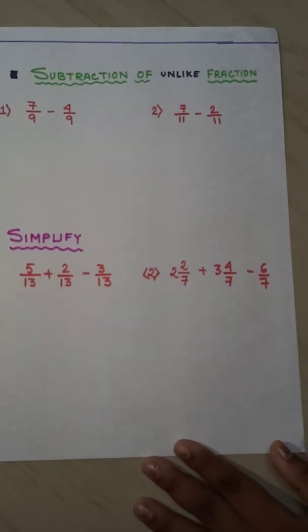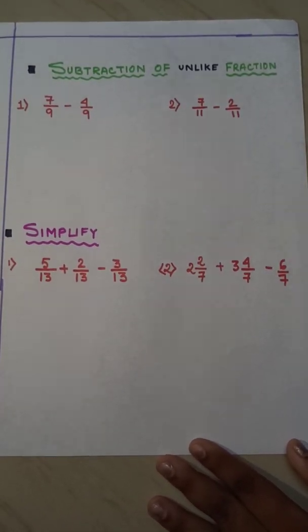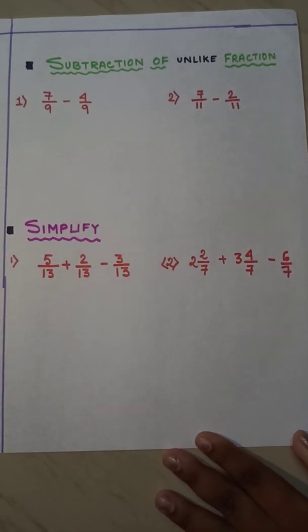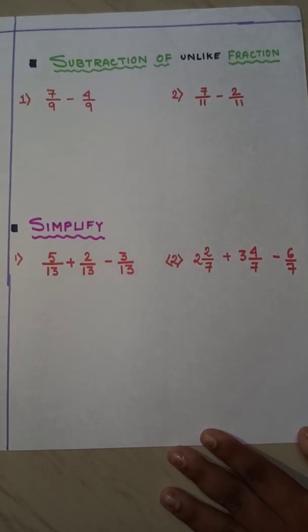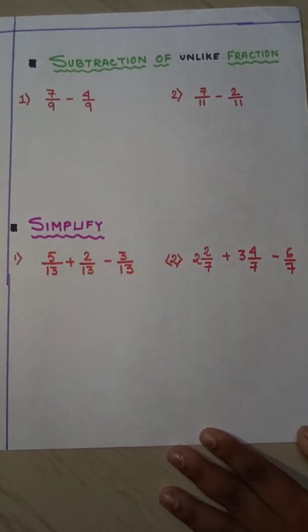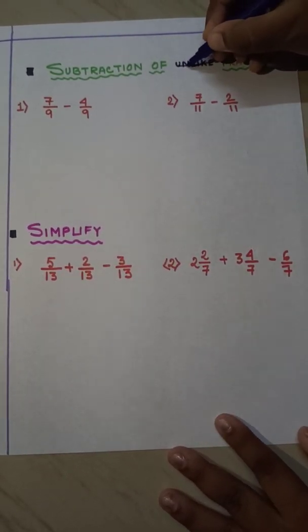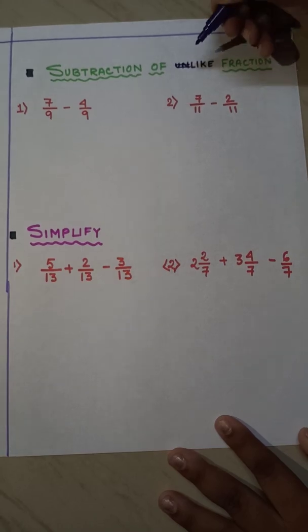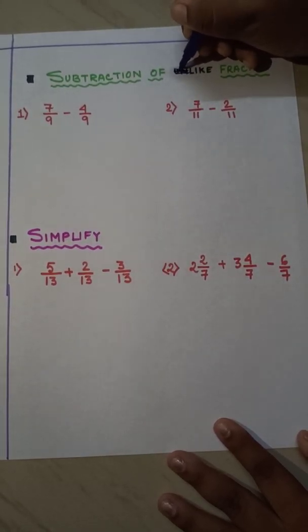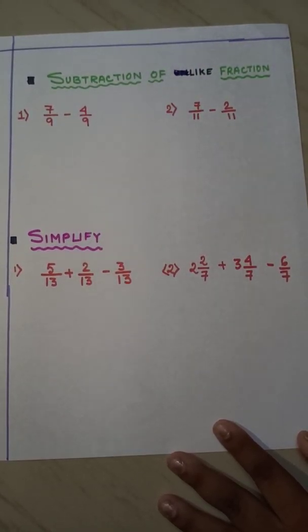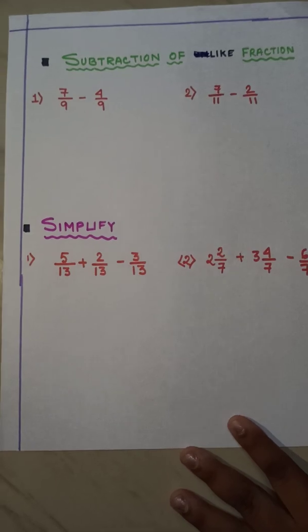The next portion is subtraction of like fractions — sorry, it is written wrong there; it will be subtraction of like fractions.